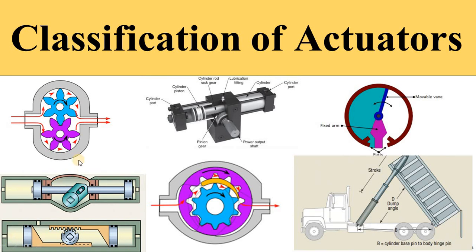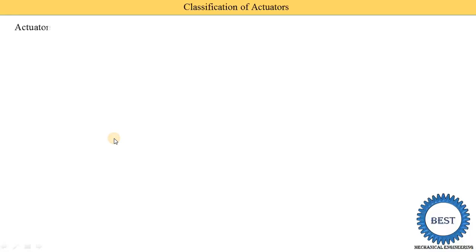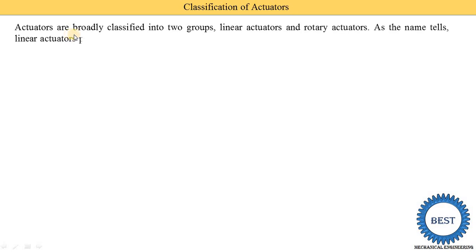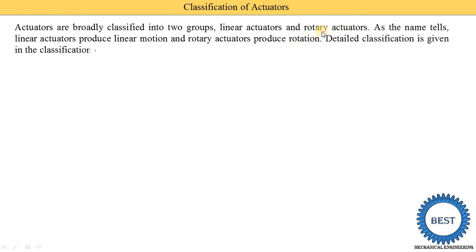In this video I explain classifications of actuators using a diagram so you can understand it easily. Actuators are broadly classified into two groups: first is the linear actuators and second is the rotary actuators. Linear actuators produce linear motion, that's why they are called linear actuators, and rotary actuators produce rotation.